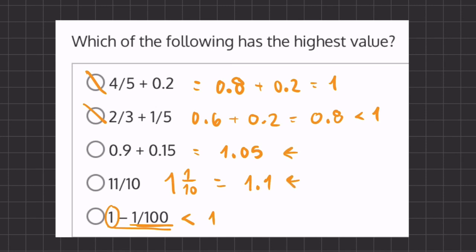And 1.1 is the largest value here. So 11 over 10 is going to be our final answer.